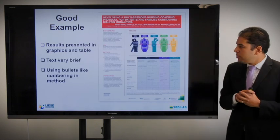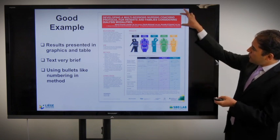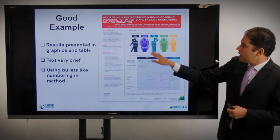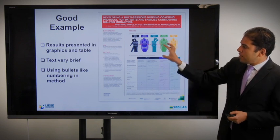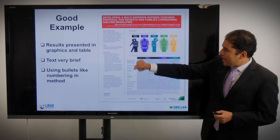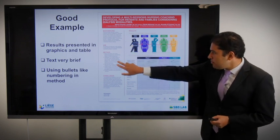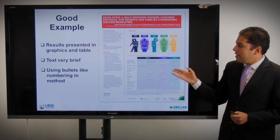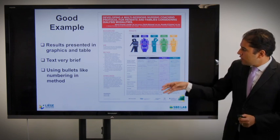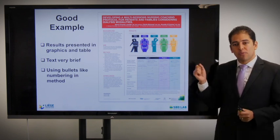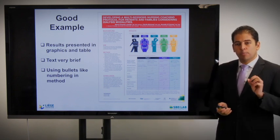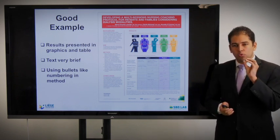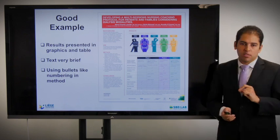A good example: much simpler. A very good title taking one-eighth of the poster. Results are presented graphically — only one table and one graph. Text is very brief: background, aim, method, conclusion, some references. This is almost a perfect poster. Bullets and numbering are very useful. It can be read very fast. The most difficult thing with a poster is to summarize the whole paper into one key message and highlight what you are going to present.